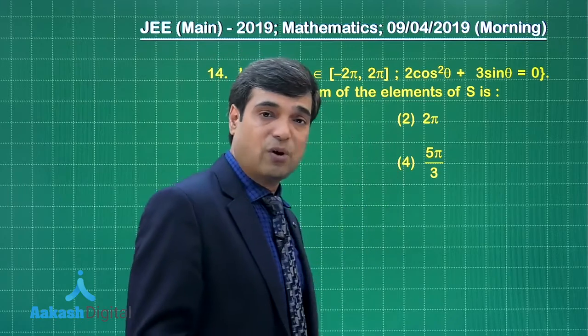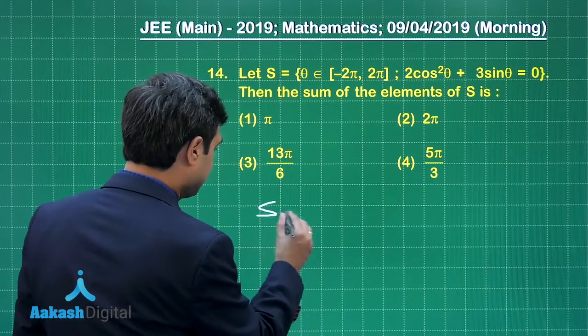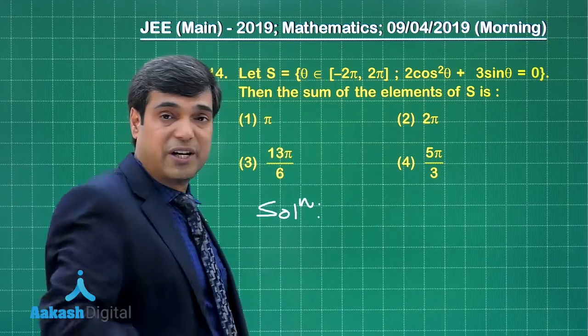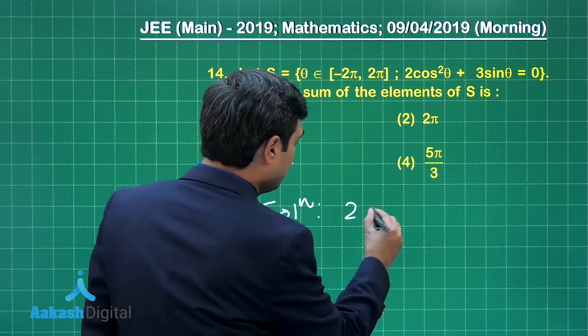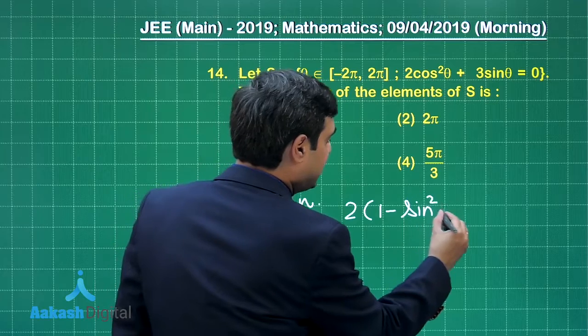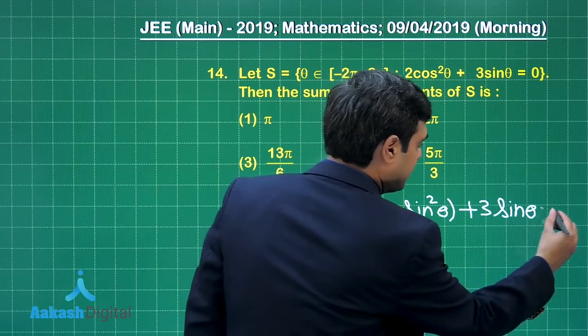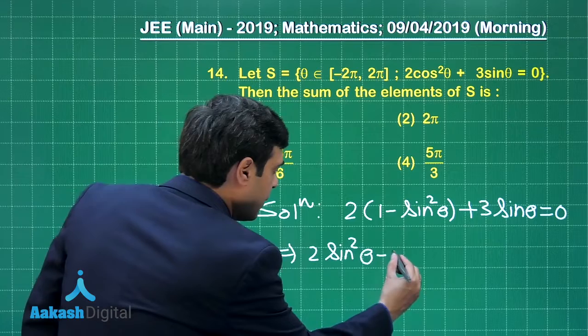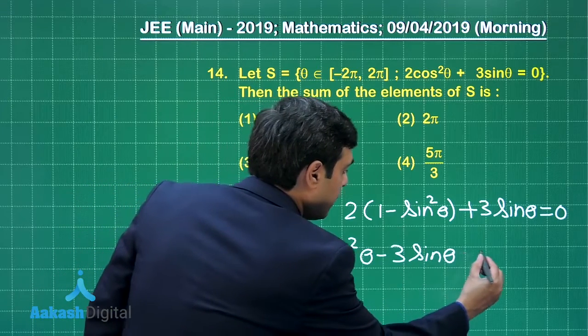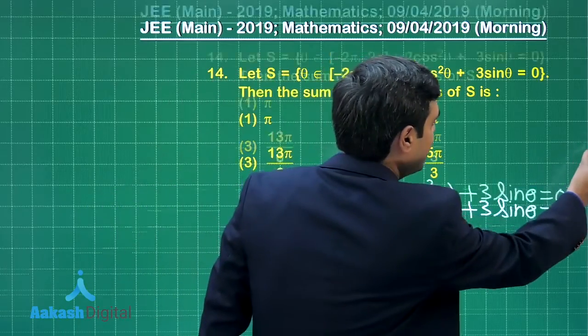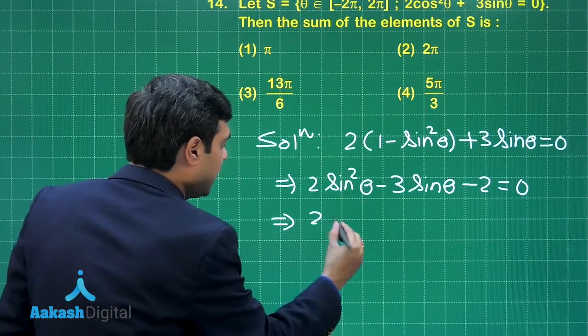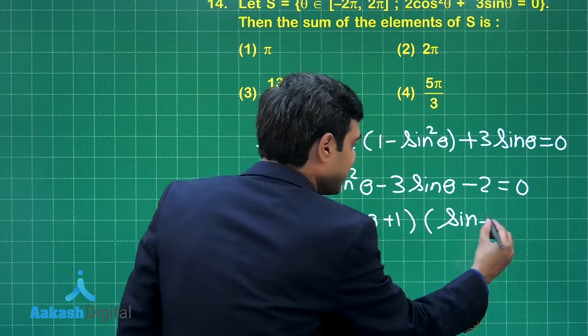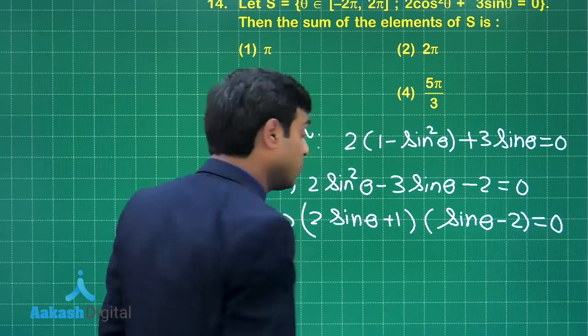Let us solve this. We can change cos²θ into terms of sinθ to get a quadratic equation. We write 2(1 - sin²θ) + 3sinθ = 0, which gives 2sin²θ - 3sinθ - 2 = 0. Factorizing by splitting the middle term, we get (2sinθ + 1)(sinθ - 2) = 0.